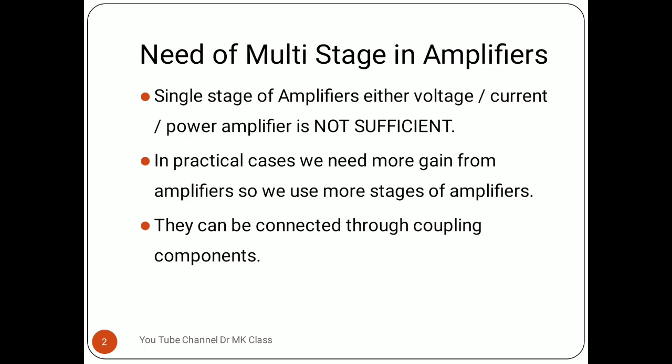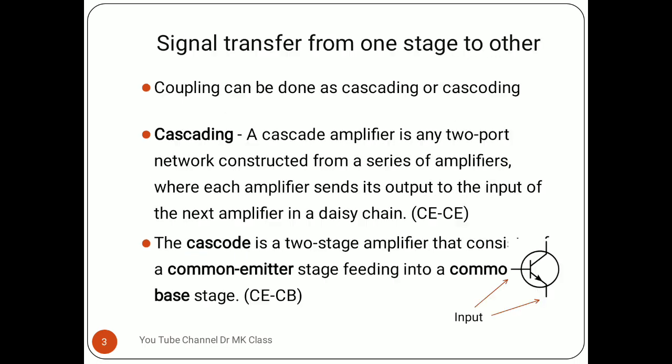One stage is connected to the other stage either through coupling components or directly. If you connect the output of one amplifier directly to the next stage, it is called direct coupling. If a transformer is used between two stages, it is called transformer coupling. The signal transfers from one stage to the other through these coupling components.